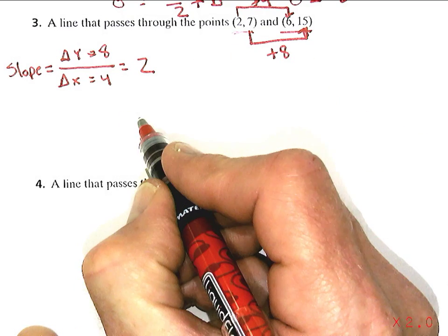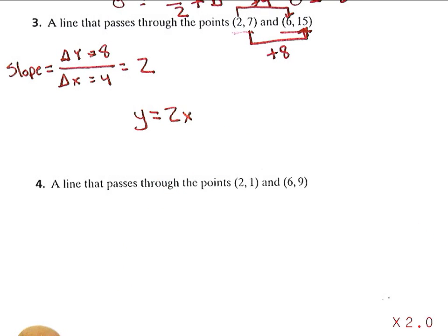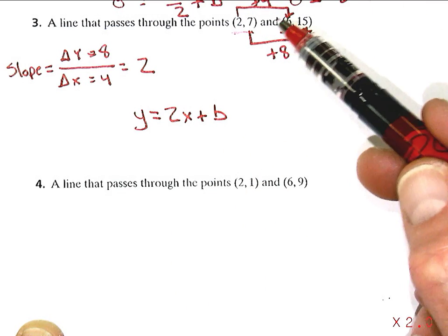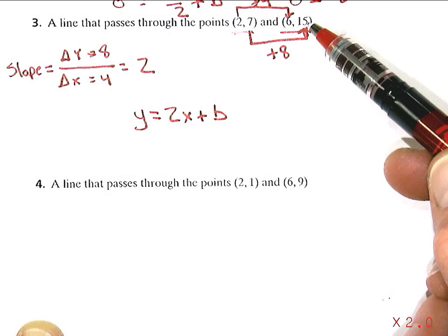So I at least have this much of the equation: y equals the slope times x plus the y-intercept. And this is the part where now I can use the problem that I already have to solve this.